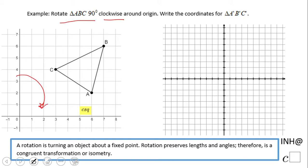I'm going to grab some graph paper and plot point C, which is (3, 4): 1, 2, 3 across and 1, 2, 3, 4 up — right here. This is the origin, and I need to rotate that point around the origin.